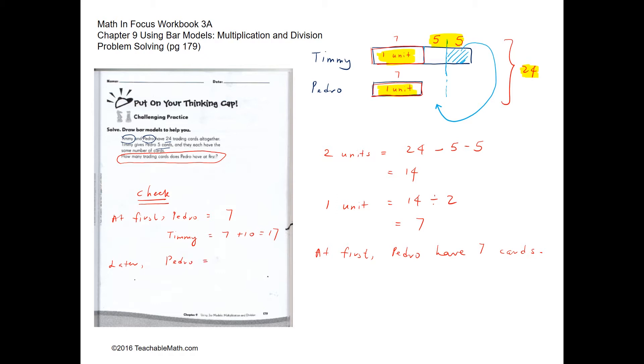And later, Pedro would have 7 plus 5. Why is it 7 plus 5? Because now we have the 7, we have the 5 that is given away to Pedro, so it's 7 plus 5 and this is 12.